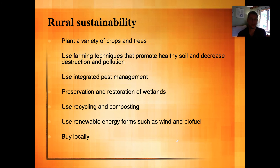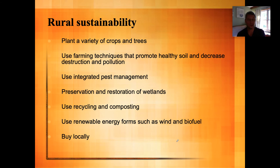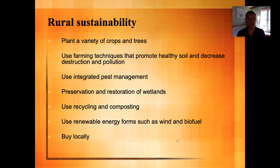In rural areas, there are things that can be done. You can plant a variety of crops and trees to return nutrients to the soil. You can use farming techniques that promote healthy soil and decrease destruction and pollution. You can use integrated pest management — finding a biological way to manage insect pests rather than using chemicals. We can preserve and restore wetlands, use recycled materials, compost, and use renewable energy such as wind and biofuel, which is combustible fuel produced typically by algae or bacteria. Buying locally also reduces the need to ship products long distances.